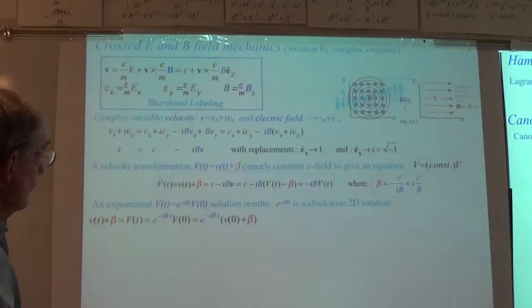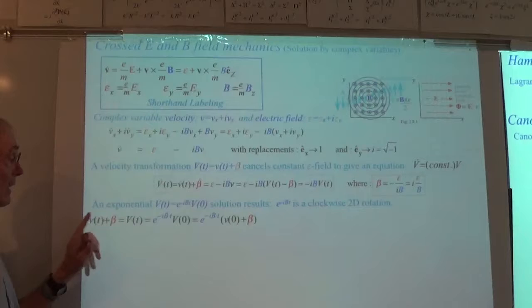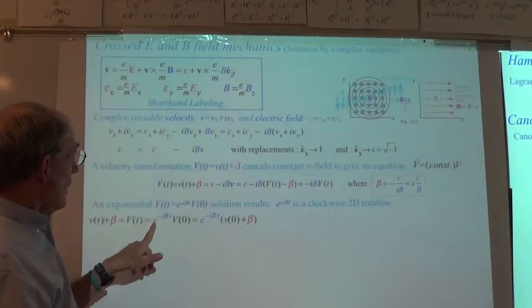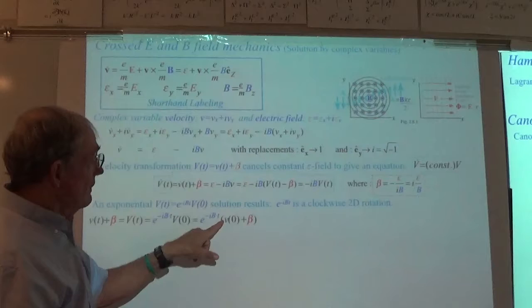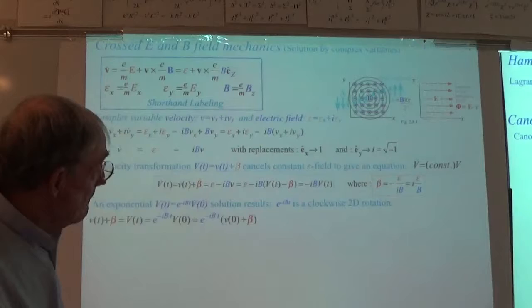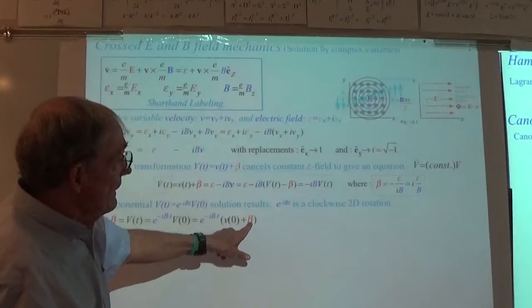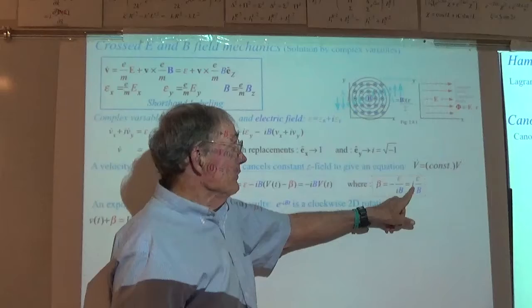Big V is being rotated, and it's in a reference frame moving at speed beta. Beta is the electric field divided by B, so beta is in the y direction — the i direction. There's the complex form of the thing written out using little v and the original expressions for an electric field only in the x direction, and then the B term has an i in front of it.